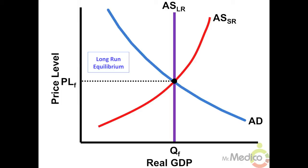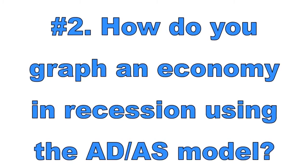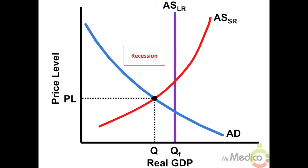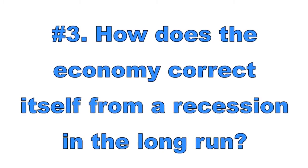Number two: how do you graph an economy in recession using the ADAS model? To graph a recession in the short run, the AD curve and SRAS curve should intersect to the left of the LRAS curve. A recession occurs when aggregate demand shifts to the left, which can be caused by a decrease in consumer spending, investment spending, government spending, and/or net export spending.